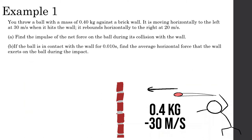Example number one: you throw a ball with a mass of 0.4 kilograms against a brick wall. It is moving horizontally to the left at 30 meters per second when it hits the wall. It rebounds horizontally to the right at 20 meters per second. Find the impulse of the net force on the ball during its collision with the wall.